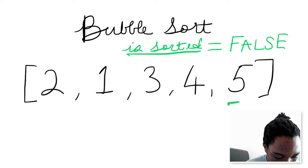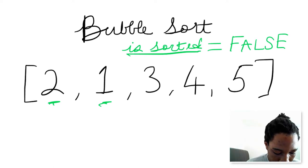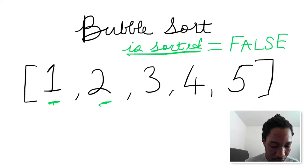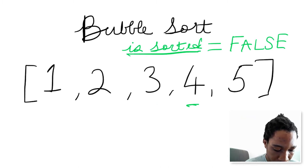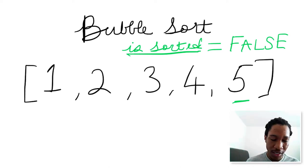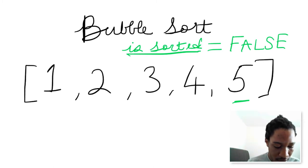So we start over and compare 2 and 1 — is 2 less than or equal to 1? No, 2 is actually greater than 1, so 2 should come after 1. We grab 2, swap them, then compare 2 and 3 — they're in place because 2 is less than 3. Then we compare 3 and 4 — in place. We compare 4 and 5 — in place. We're done with the entire array. Did we ever swap elements while going through this iteration? Yes, we swapped 2 and 1, so we have to go through another iteration to check.